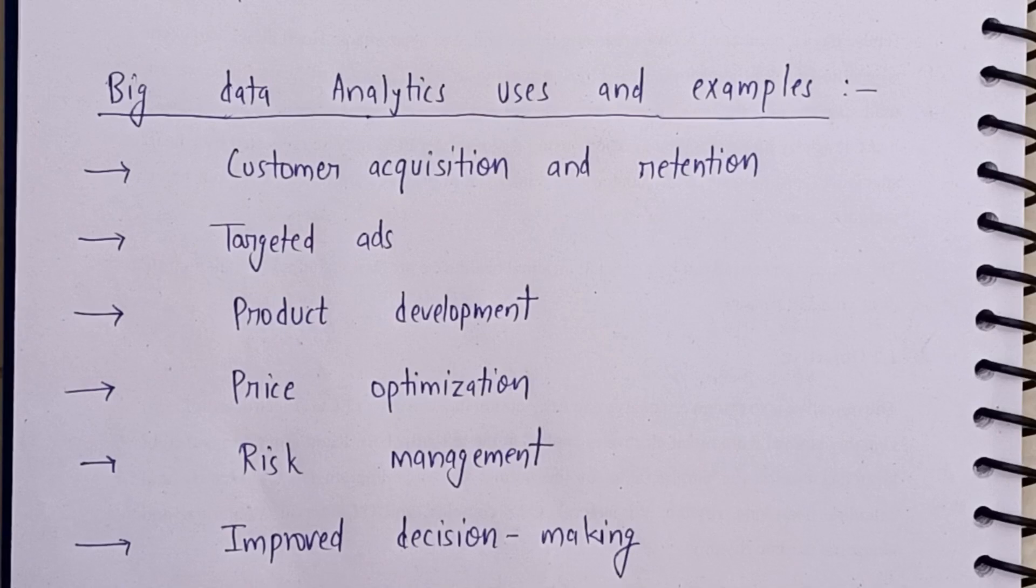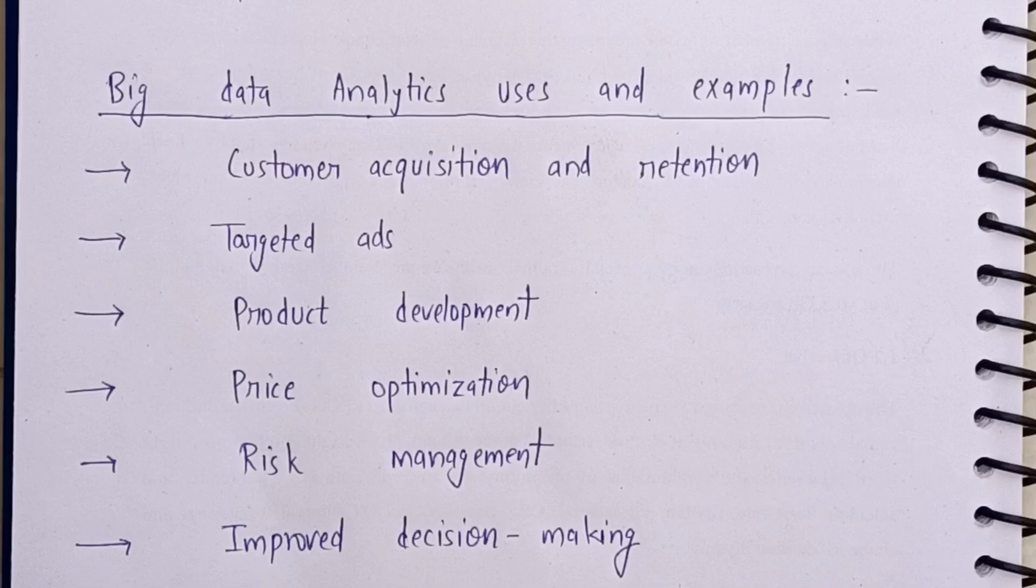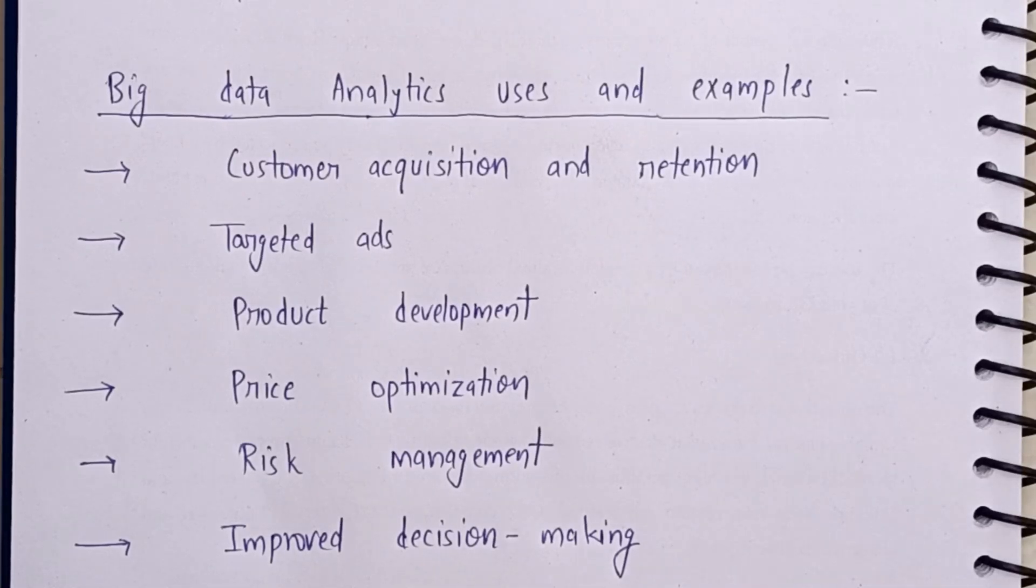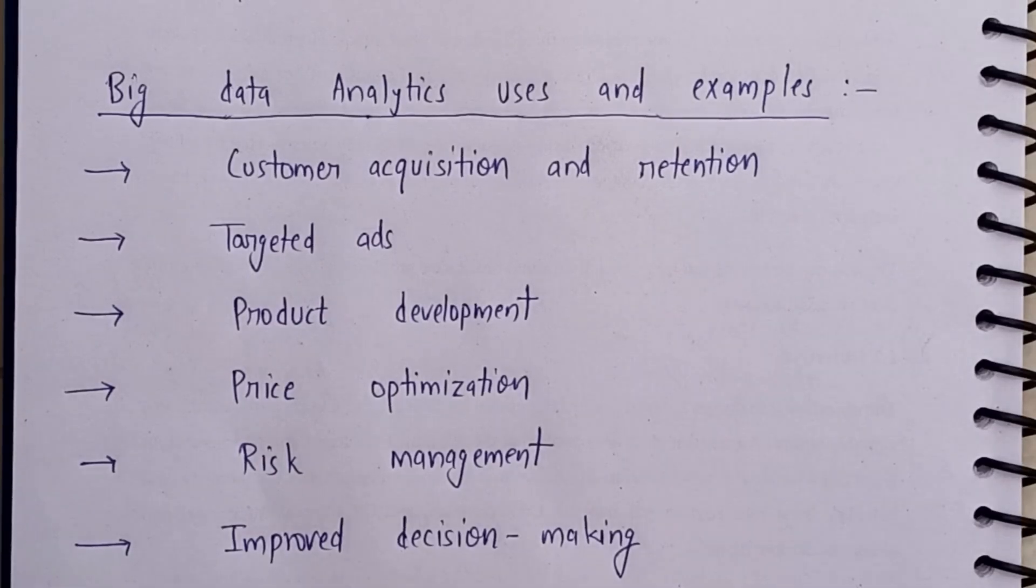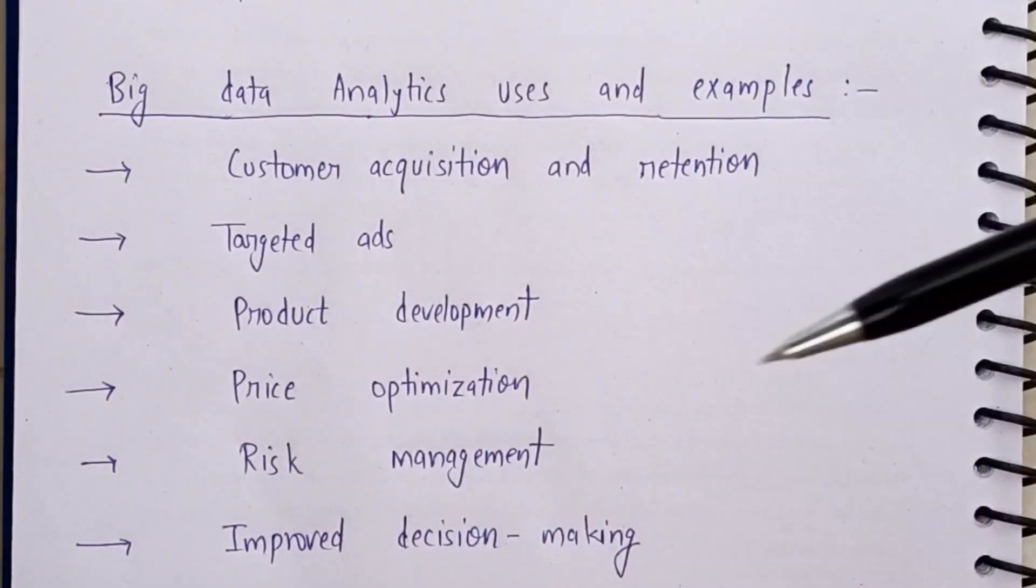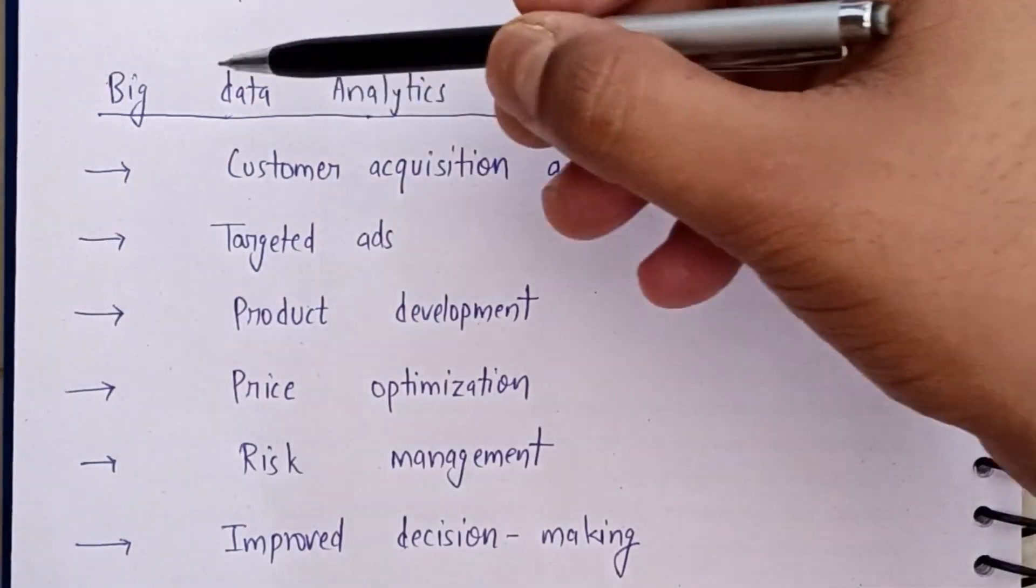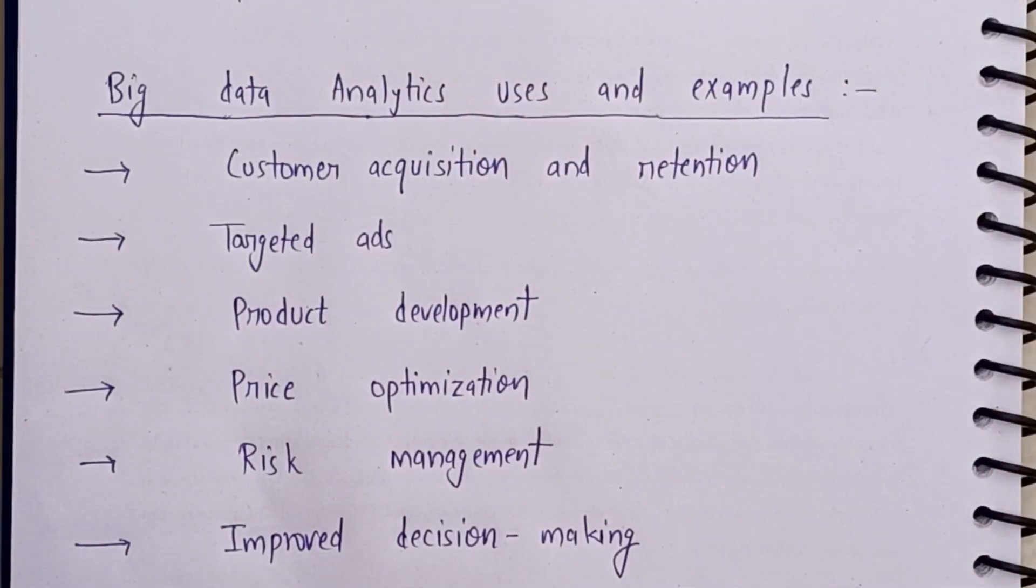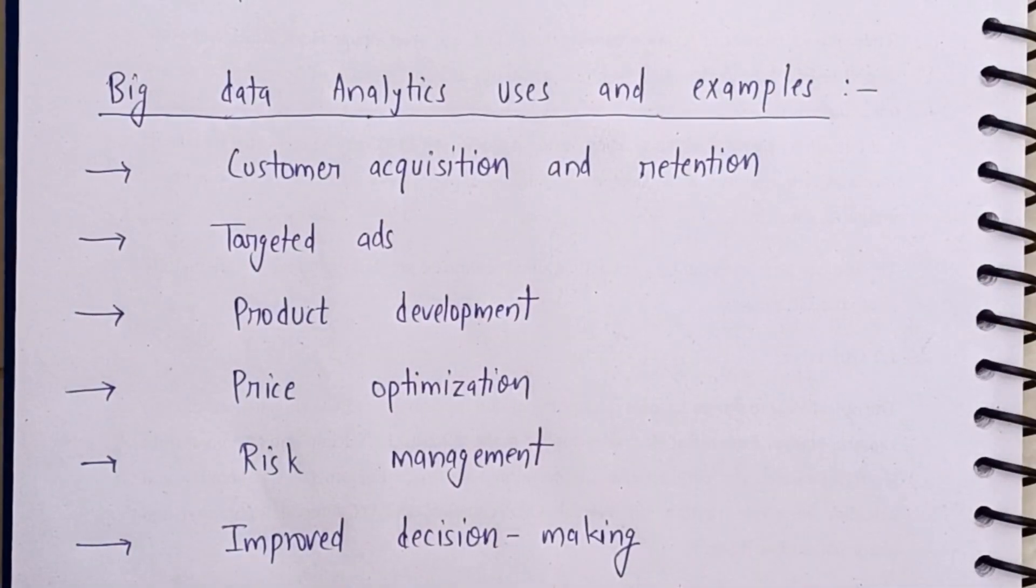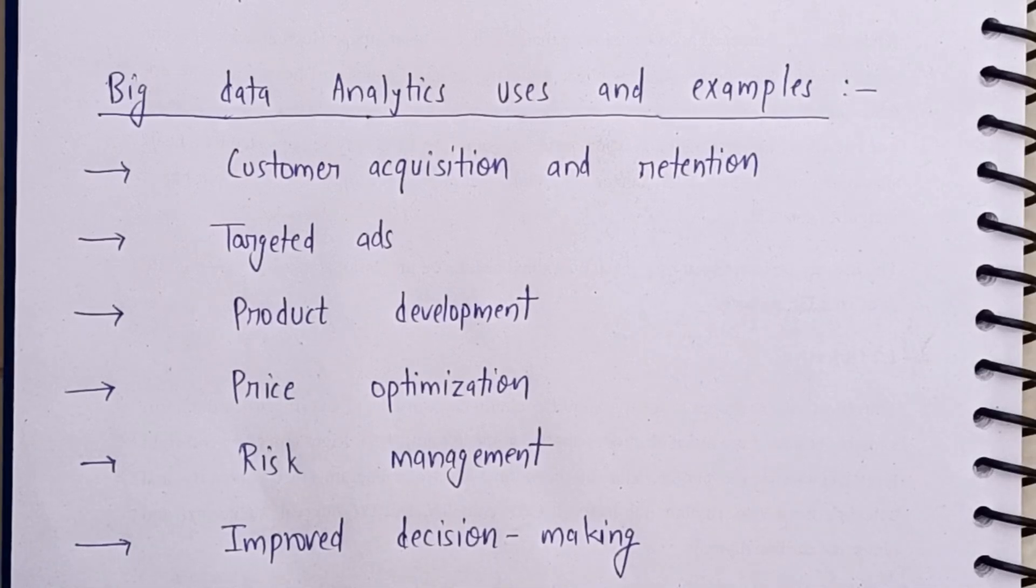Price optimization - if you can analyze the data, you can see how to reduce costs and bring the product at a cheaper rate so more customers can purchase it. Risk management - how much risk will be involved if you do this. If you can analyze big data, these things are possible. And lastly, improved decision making - when you analyze the data, you will have accurate and proven data according to which you can make decisions, and this will improve your decision making. This is all for this video. Hope you guys have now understood what is big data.